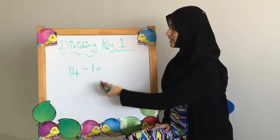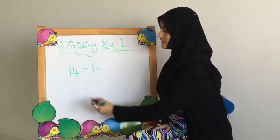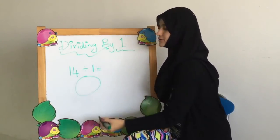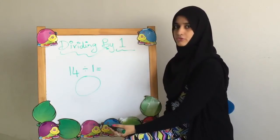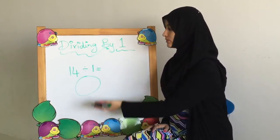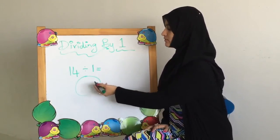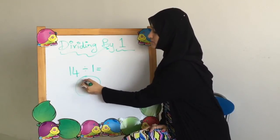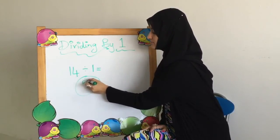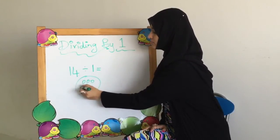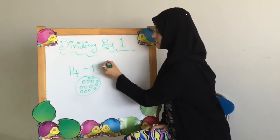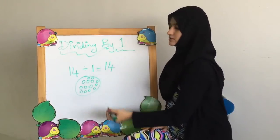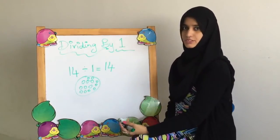14 divided by 1. We are going to make one set and distribute 14. Since we have only one set, we are going to put all 14 balls within it. The answer is the set size, which is 14.